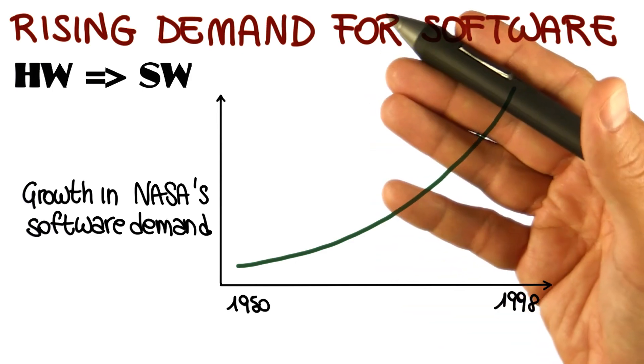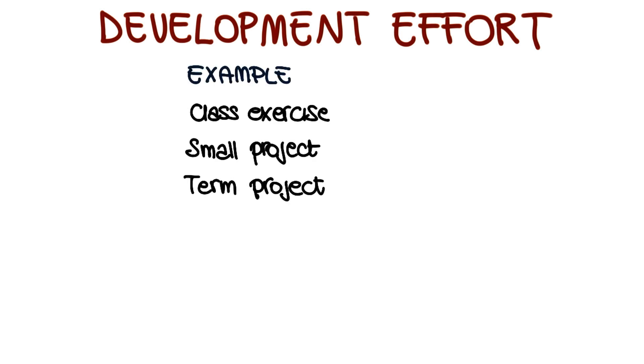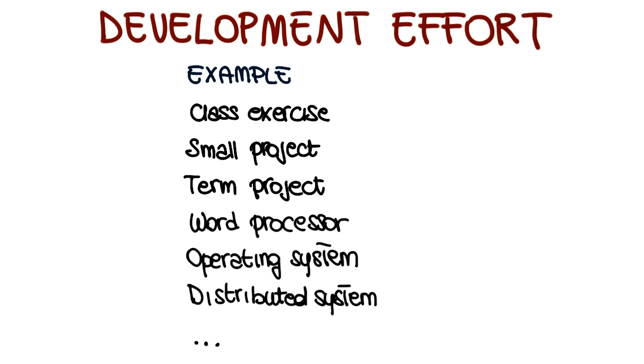The second cause for the software crisis was the increasing amount of development effort needed due to the increase of product complexity. Unfortunately, software complexity does not increase linearly with size. It is not the same thing to write software for a class exercise, or small project, or a term project, than it is to build software for a word processor, an operating system, a distributed system, or even more complex and larger system. And what I'm giving here is just an indicative size for this software. So the class exercise might be 100 lines of code, the small project might be 1,000 lines of code, and so on and so forth.